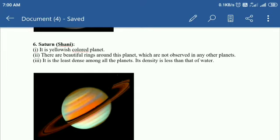Saturn, also known as Shani, is a yellowish colored planet. There are beautiful rings around this planet, and it is the least dense among all the planets.